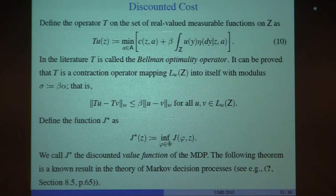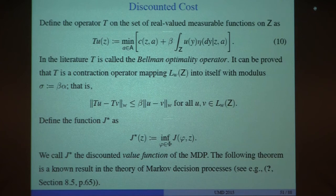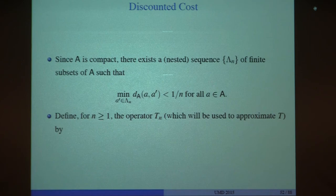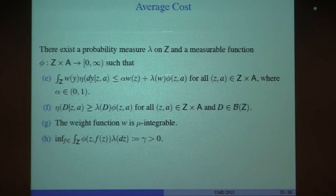For a discounted horizon problem, you look for a value function u satisfying the Bellman optimality equation. The optimal operator is a contraction mapping in the space of measurable bounded functions. For every fixed n—the cardinality of the control action space—you want to show that u_n converges to u. We can obtain conditions for this for both discounted and average cost.